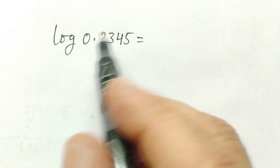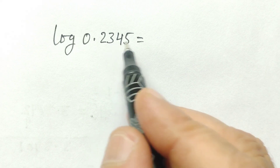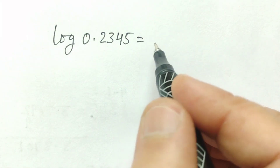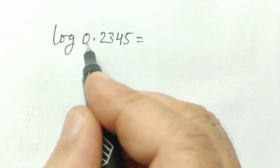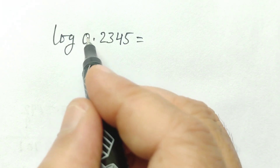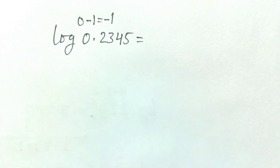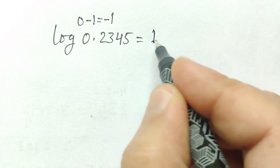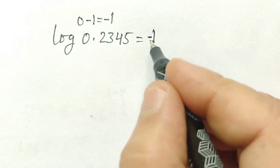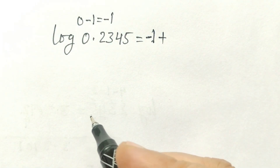Now we have to find out the value of log of 0.2345. Here first we will write the characteristic. The number of digits before the decimal is 0, minus 1 is equal to minus 1. So here the characteristic is minus 1. Then we will make a plus sign.